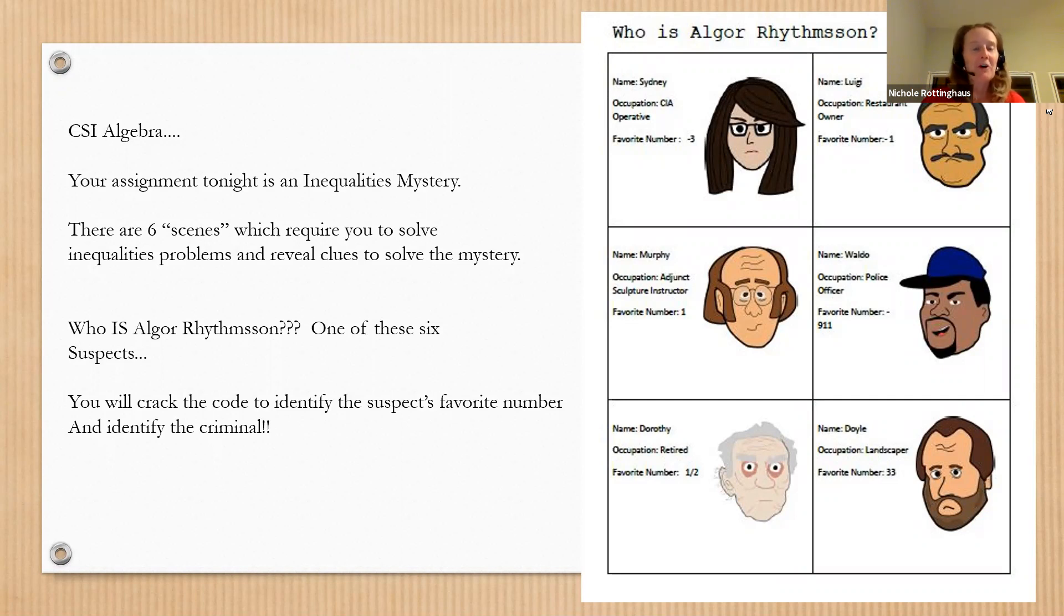You're basically trying to find these terrorists that are plotting to blow up the world and they travel all over the world. This is the first one. Your assignment today is an inequalities mystery. If you look on the right side of my screen here, there's six suspects that are listed.